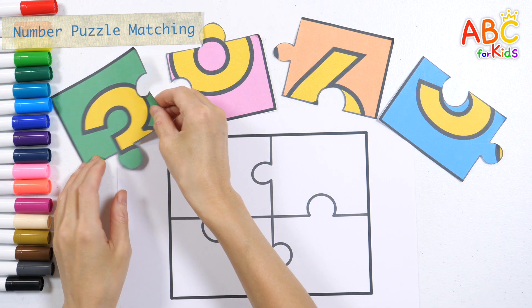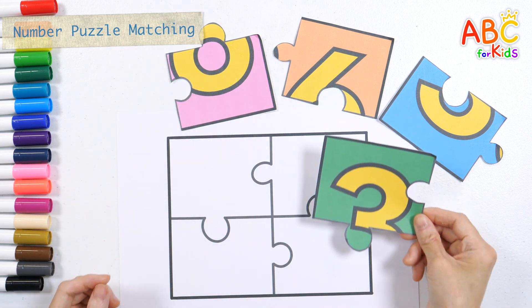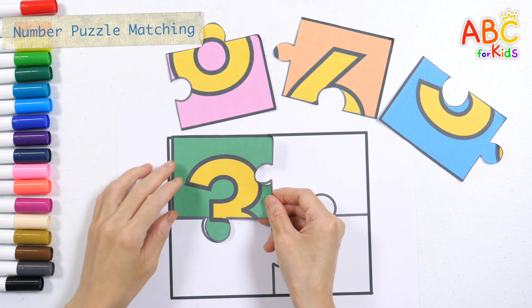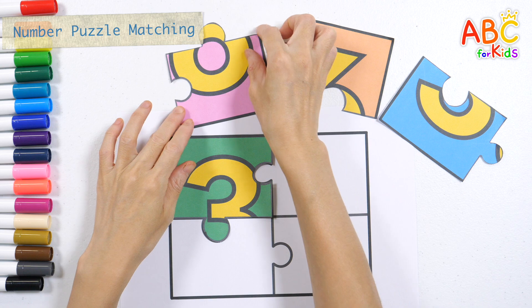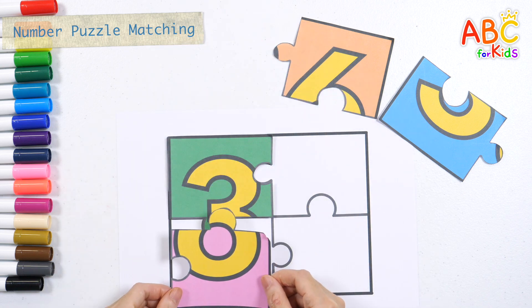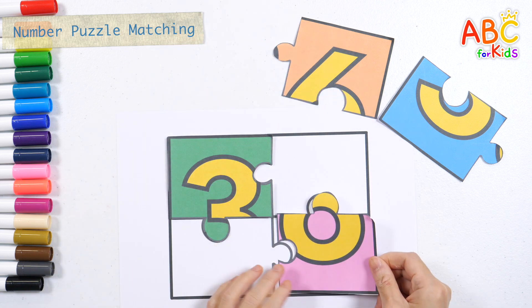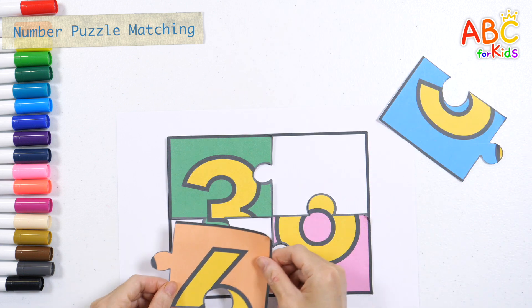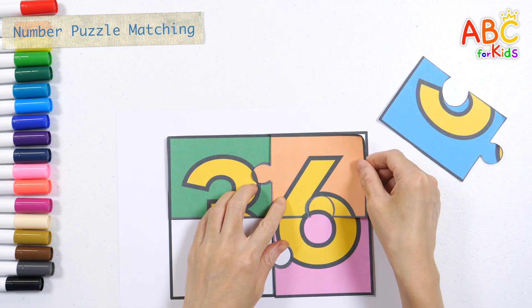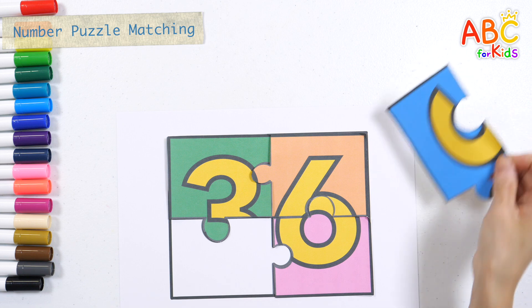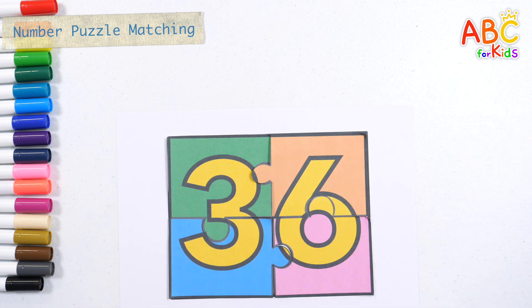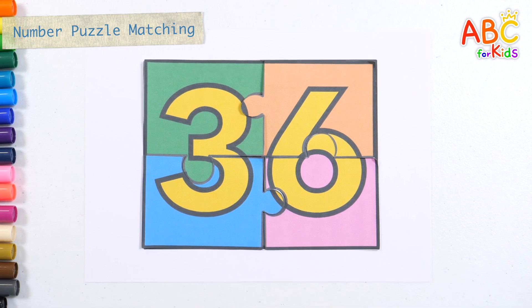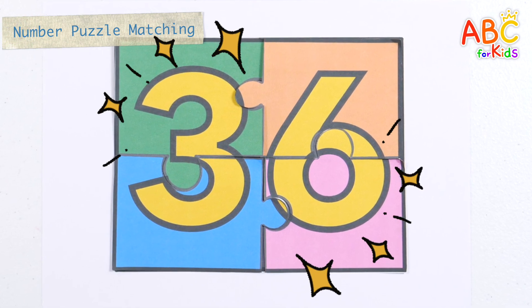Let's put the puzzle pieces in place to see what they are. When I put the puzzle pieces together, it became the number thirty-six.